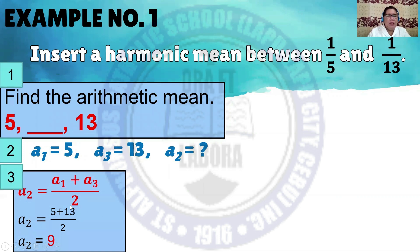All you have to do is add the two numbers: 5 and 13, over 2. So, 5 plus 13 is 18, divided by 2. The answer is 9. So the second term is 9, meaning the arithmetic mean is 9.